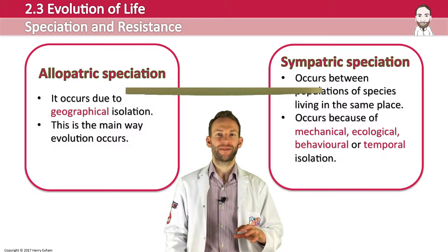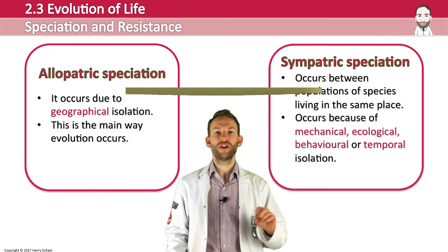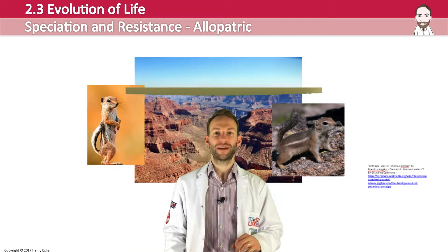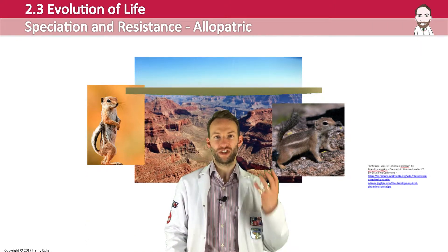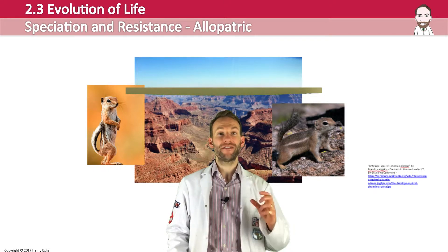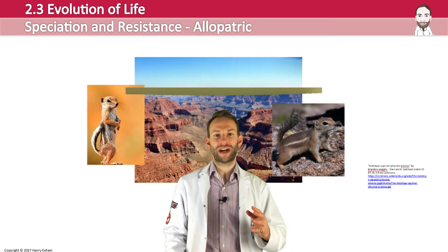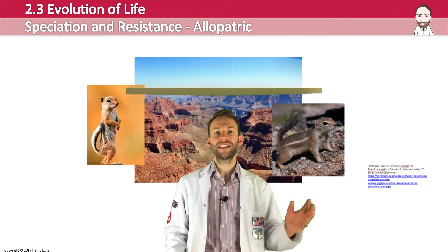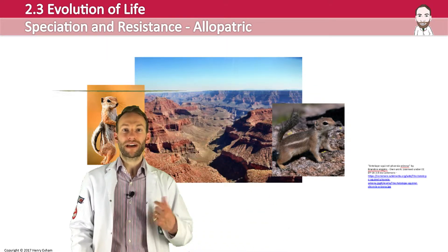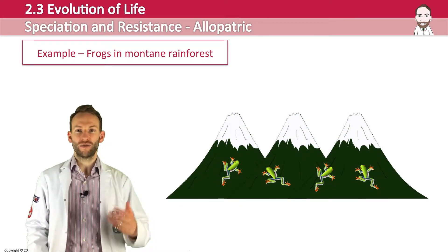In allopatric speciation, organisms evolve into two or more descendant species after a period of physical separation. It's usually caused by something geographic — like a river, a rockslide, or a mountain range. You may remember from the first video the antelope squirrel that got separated by the Grand Canyon — that is an example of allopatric speciation. Another great example is frogs in the montane rainforest.